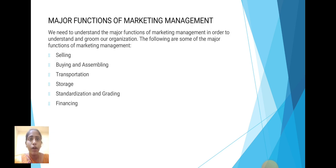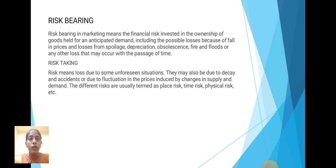Major Functions of Marketing Management: We need to understand the major functions of marketing management in order to understand and grow our organization. The following are some of the major functions of marketing management: first, selling; second, buying and assembling; third, transportation; fourth, storage; fifth, standardization and upgrading; and next, financing. And next one is risk-bearing.